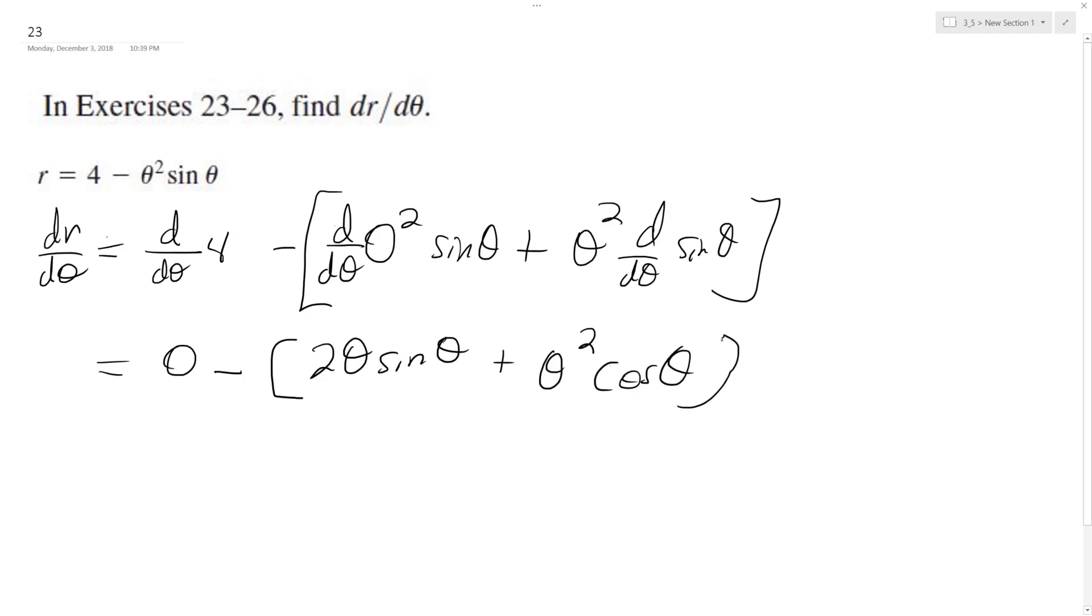And then we can leave the negative sine out here, so we end up with negative, and we can pull out a theta here, so we end up with 2 sine theta plus theta cosine theta, and that's it.